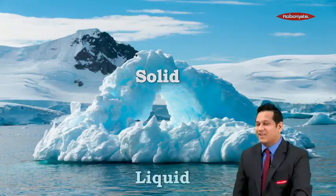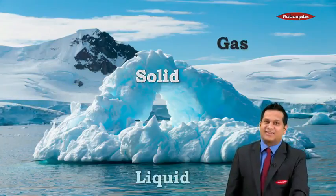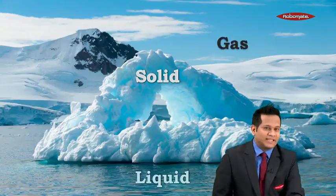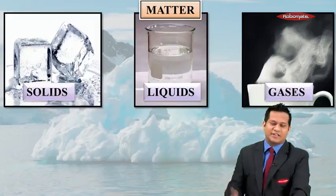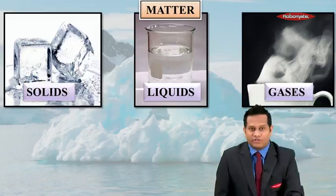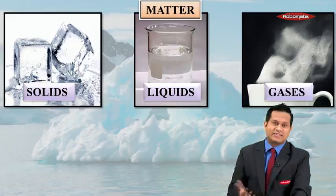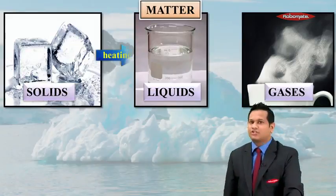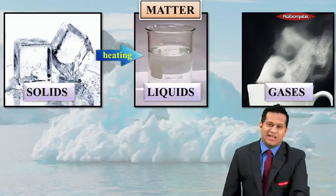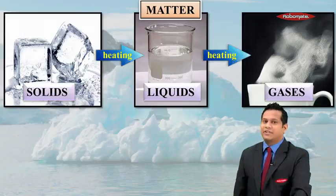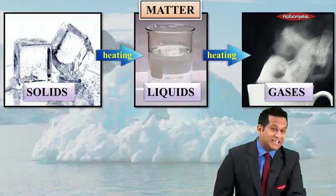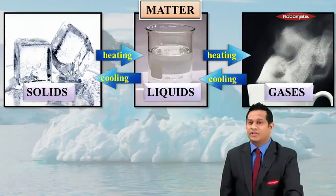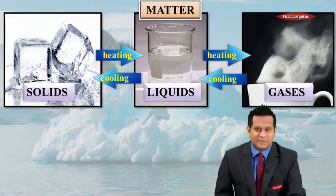Matter has three simple states: the first one is solid, the second one is liquid, and the third one is gas. A simple example of a solid is ice, of a liquid is water, and of a gas is steam. From previous knowledge, we know that solids on heating convert to liquids, liquids on further heating convert to gas, gases on cooling turn to liquid, and liquids on further cooling turn to solids.